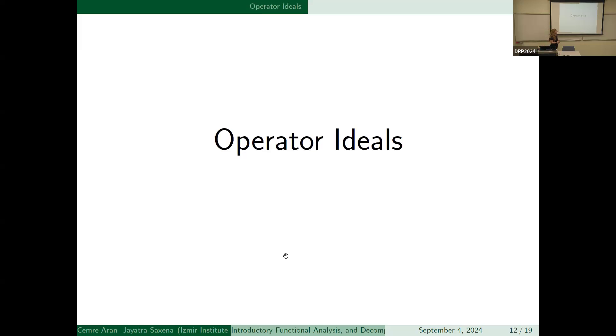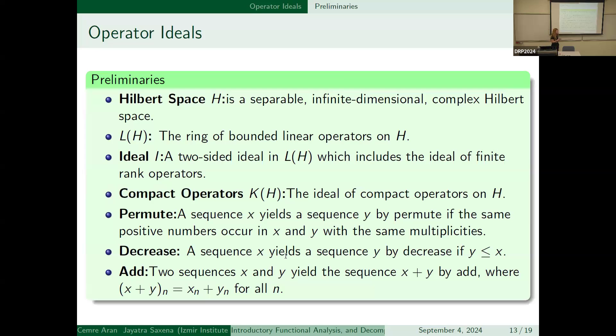Then this part of the presentation, we will look at the operator ideals. But we need some preliminaries to understand the operator ideals. Hilbert space is a separable infinite-dimensional complex space. And L(H) is the ring of bounded operators on H. Ideal I, a two-sided ideal in L(H), that includes finite-rank operators. And K(H) is the ideal of compact operators on H.